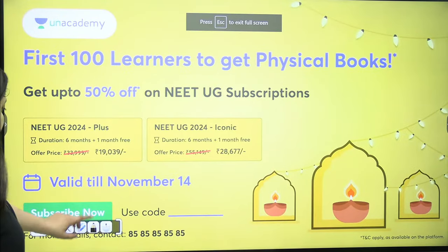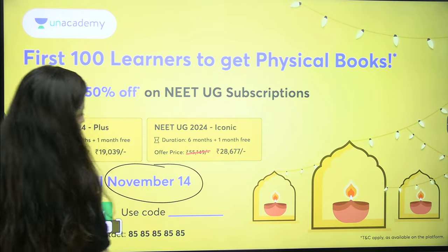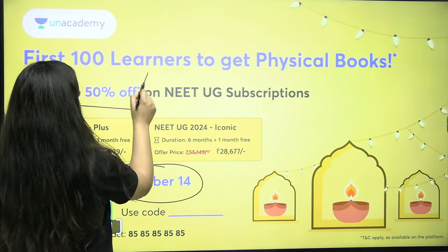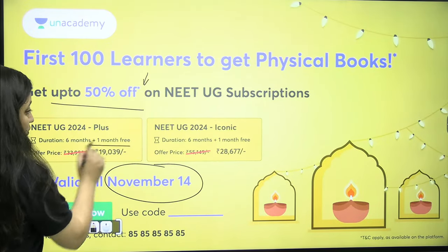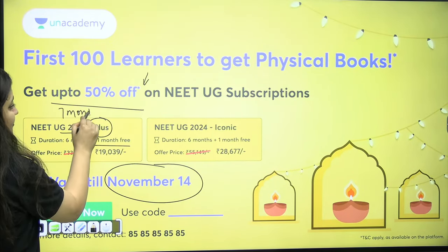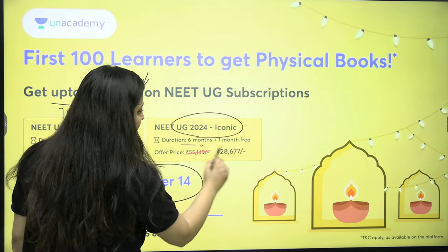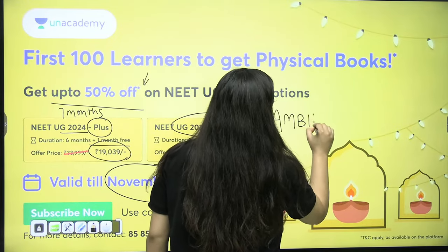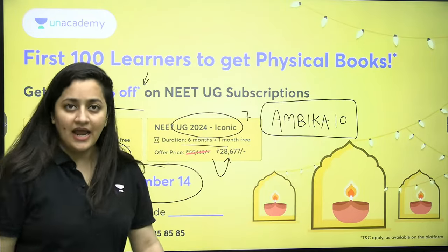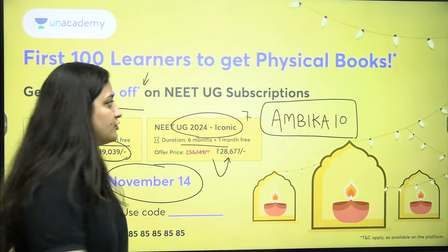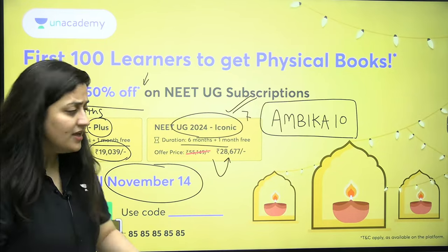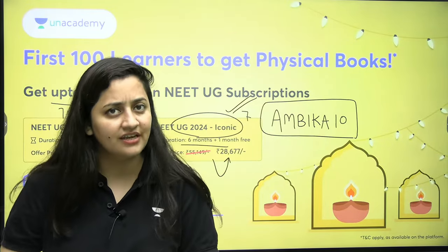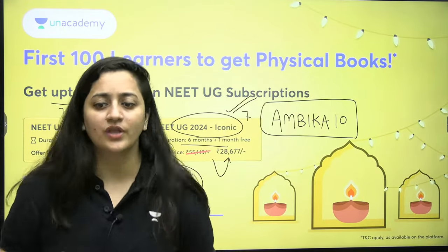Before we start, note that till November 14th you will get additional discounts on all Unacademy courses — up to 50% off on NEET UG subscription with an extra one month. You can get 7 months' subscription for just ₹19,000. Use the coupon code in the description to join batches. For Avengers 3.0 batch, use the specific coupon code. I'll share the PDF after class in the Telegram group with a QR code for all details.